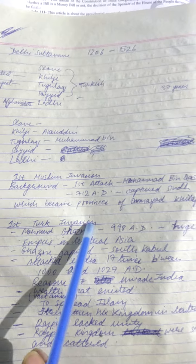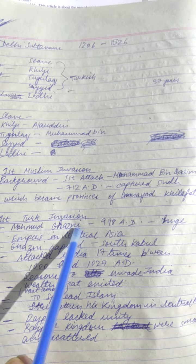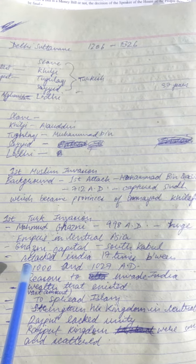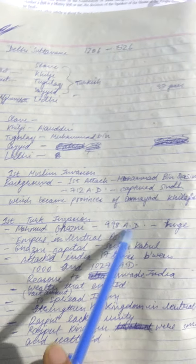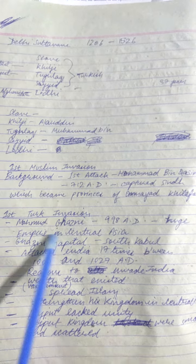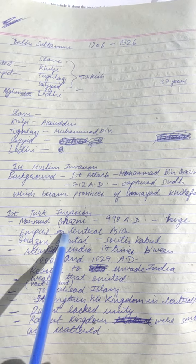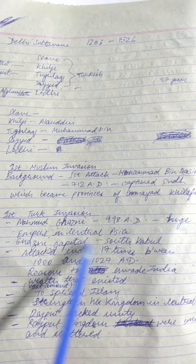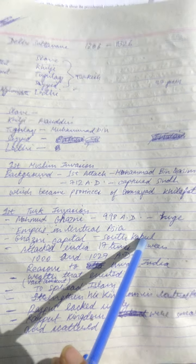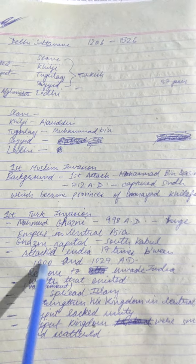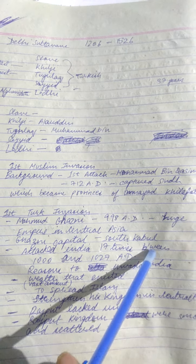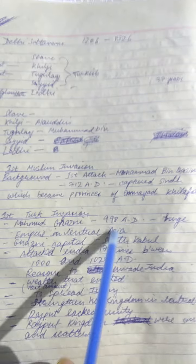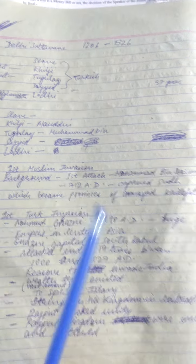After that, there was the first Turkish invasion by Mahmud Ghazni in 998 AD. He had a huge empire in Central Asia but wanted to invade the Indian subcontinent also. Ghazni's capital was south of Kabul, which is in present-day Afghanistan. He attacked India 17 times between 1000 and 1027 AD.